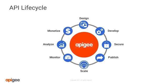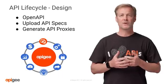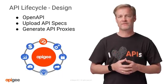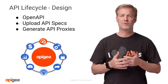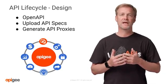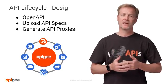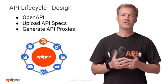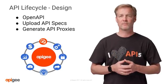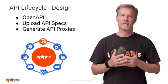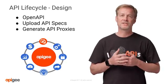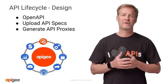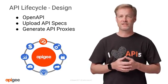We'll start with design. Design can start by creating an open API specification. Apigee supports the open API initiative and allows engineers to upload their specs into the platform to generate the API proxy. This is a convenient and fast process to get started.